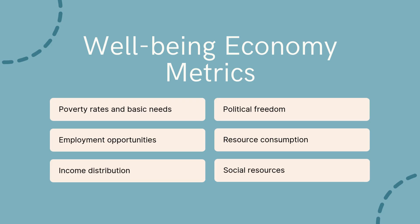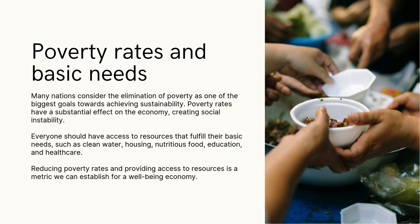The well-being economy metrics include poverty rates and basic needs, employment opportunities, income distribution, political freedom, resource consumption, and social resources. Let us look at them one by one. Poverty rates and basic needs: many nations consider the elimination of poverty as one of the biggest goals towards achieving sustainability — it is primary in the UN SDGs. Poverty rates have substantial effect on the economy, creating social instability. Everyone should have access to resources that fulfill their basic needs, such as clean water, housing, nutritious food, education, and healthcare. Reducing poverty rates and providing access to resources is a metric we can establish for a well-being economy.